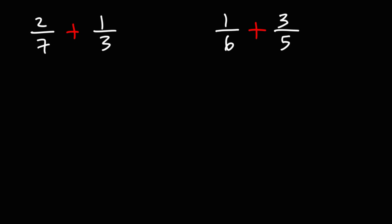Let's talk about how to add and subtract fractions with unlike denominators. When adding and subtracting fractions with different denominators, what you need to do is get common denominators first. Once you get the bottom numbers to be the same, then you can add the numerators, or the top numbers. So let's begin.